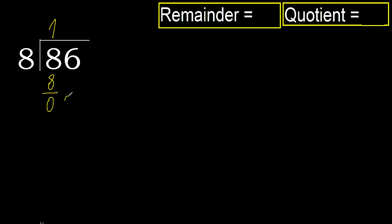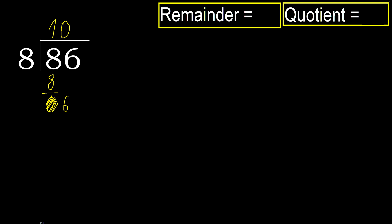Next, bring down the 6. 6 is less than 8, therefore we move to the next step. There is no further number, so we finish here. Complete with 0 — always complete with 0 when you finish with this number.